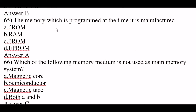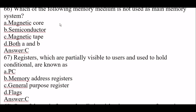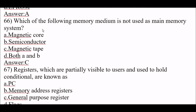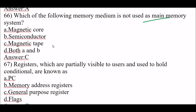Next question: which memory is programmed at the time it is manufactured? The right answer is option A, PROM. PROM memory is programmed at the time it is manufactured. Next question: which memory medium is not used as a main memory system? The right answer is option C, magnetic tape. Magnetic tape is not used as a main memory system.